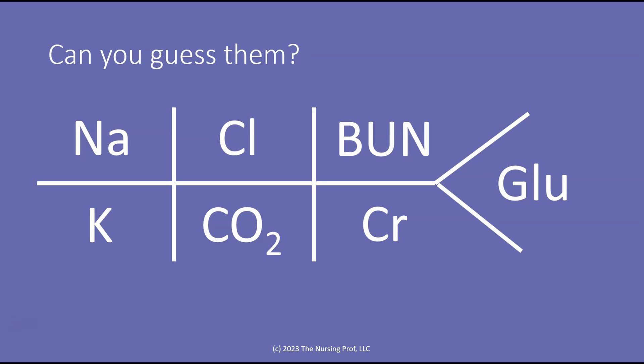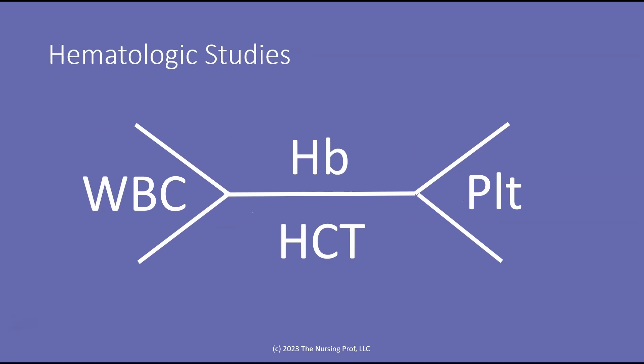What do we have on the very tail of our fishbones? That was where we put our glucose level. So this is the electrolytes in a fishbone. Now let's take a look at our hematologic studies in a fishbone. We have our white blood cell count on the left side, platelet count on the right side, top hemoglobin, bottom is hematocrit.